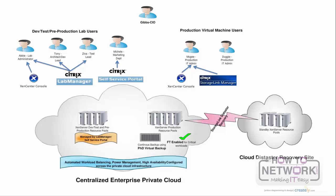In this picture, we can see the centralized enterprise private cloud. Private cloud, also called internal cloud or corporate cloud, is a marketing term for a proprietary computing architecture that provides hosted services to a limited number of people behind a firewall.